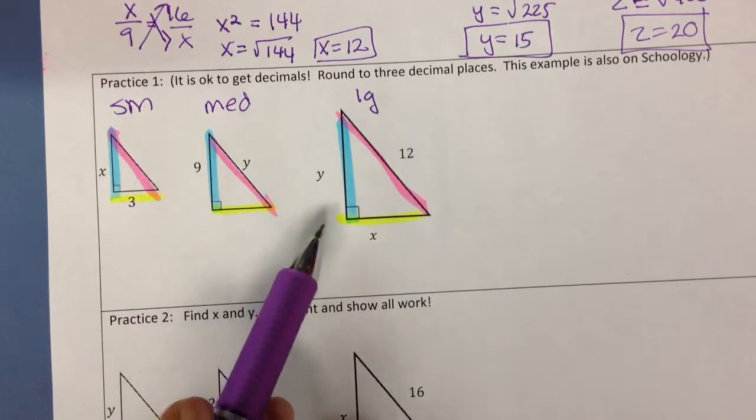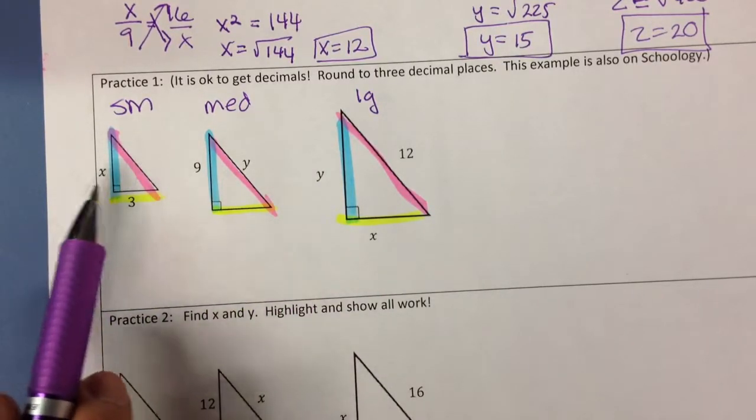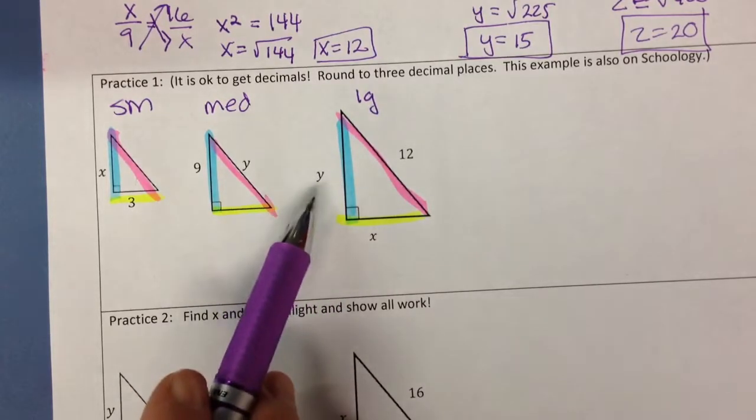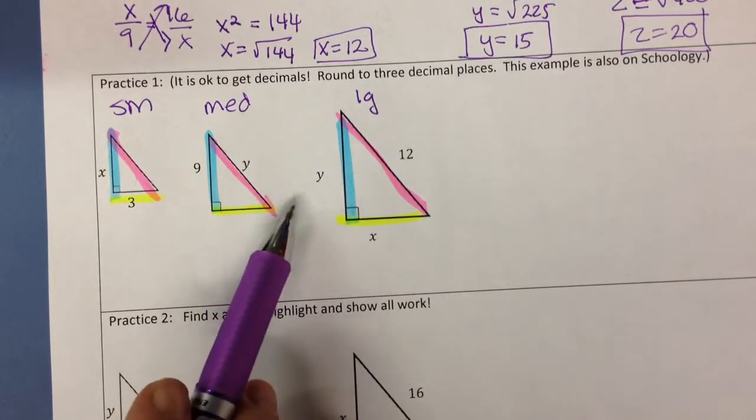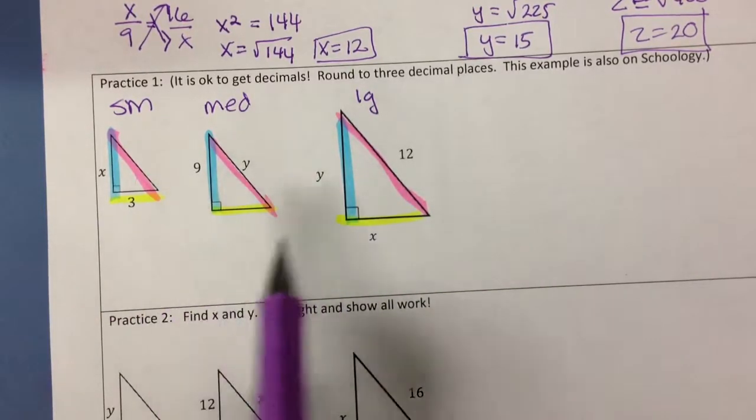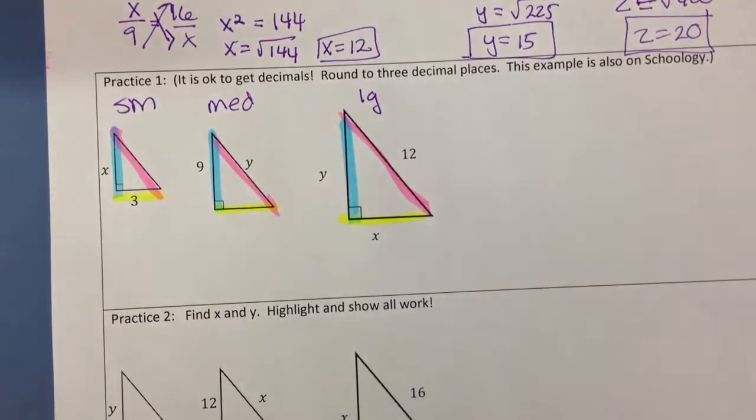But I can see that I've run into a problem on this one. And it's that my y is unknown and it's on the blue space. So I think that we're actually going to have to find y first on this one.